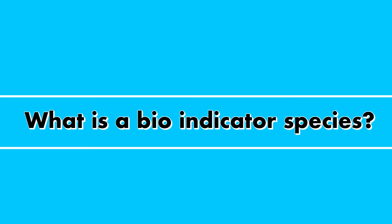What is a bio-indicator species? Bio-indicators, otherwise known as indicator species, are defined as an organism that serves as a measure of the environmental conditions that exist in a given locale. This could be a species that indicates the quality of the surrounding waterways, or a species that shows there is a lot of species richness in a certain area.